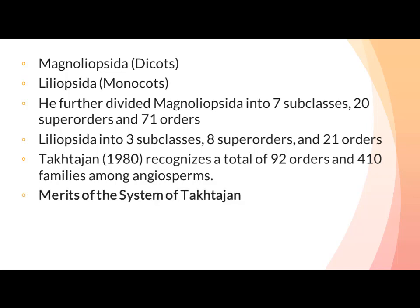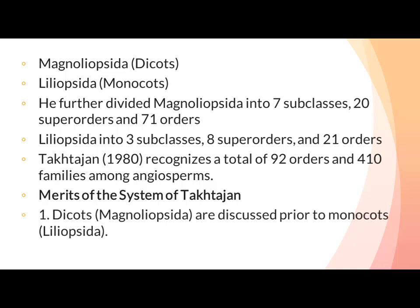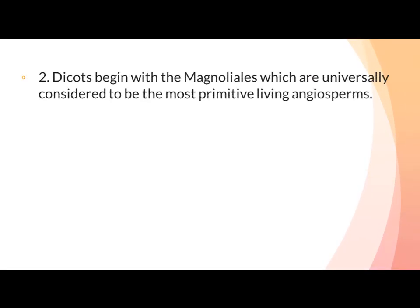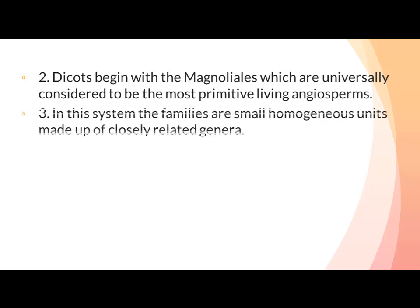Merits of the system of Takhtajan: Number one, dicots (Magnoliopsida) are discussed prior to monocots (Liliopsida). Dicots begin with the Magnoliales, which are universally considered to be the most primitive living angiosperms — the members of order Magnoliales were the ones that first developed from gymnosperms.